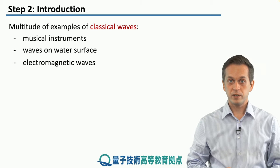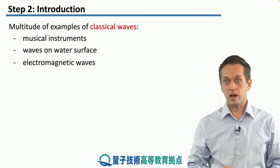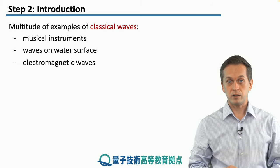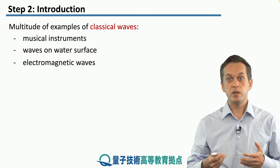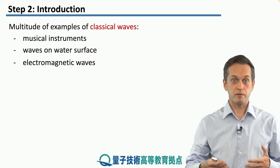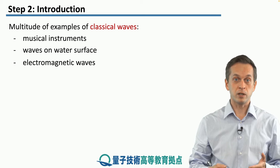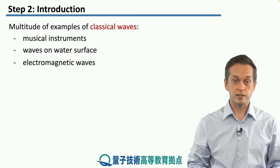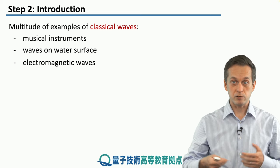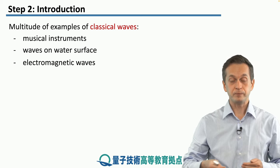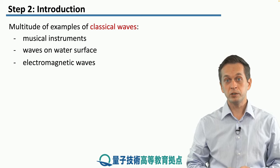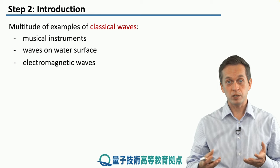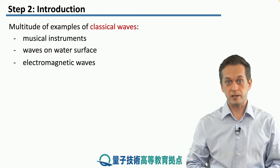Both of these examples — sound and water waves — require a medium to propagate through. In the case of sound, it's the surrounding air; in the case of water waves, it's the water itself.